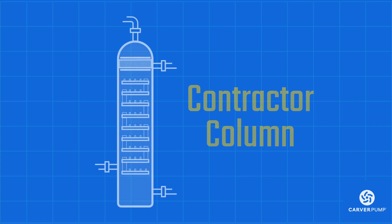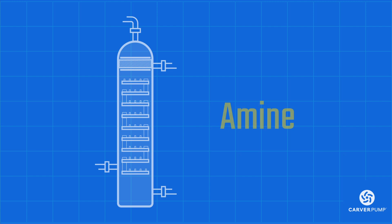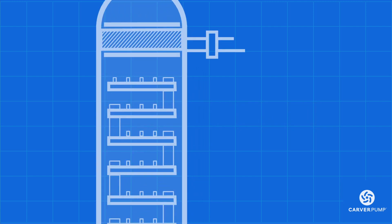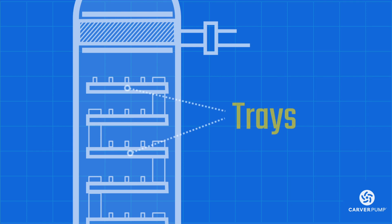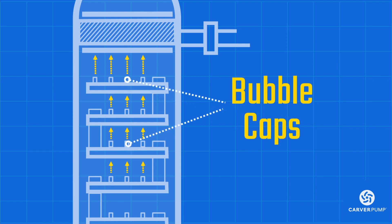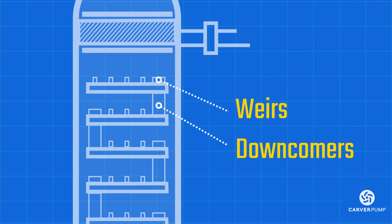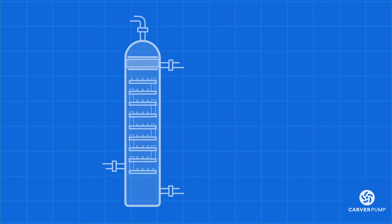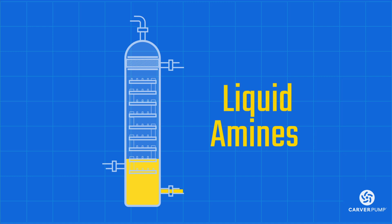The gas then makes its way into the contactor column, where it comes into contact with the amines and the H2S and CO2 are absorbed from the gas. These columns are often divided by trays. The trays contain bubble caps, which allow the gas to rise through them without the amine solution seeping through. The trays also contain weirs and downcomers that help control the downward flow of the liquid amines.